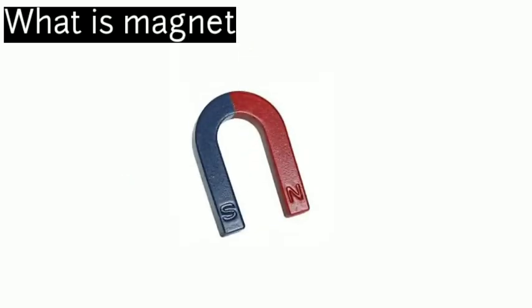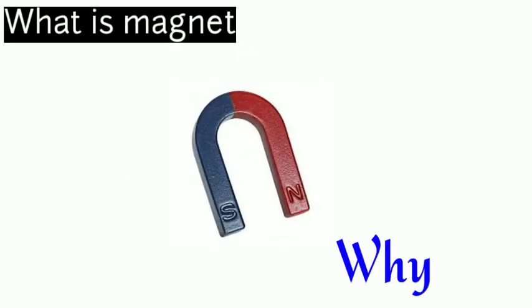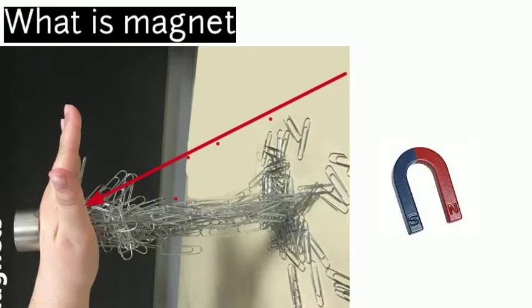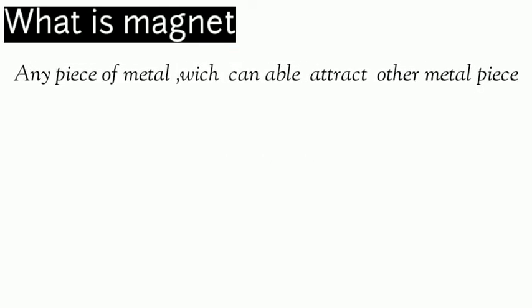So let's start. Yes, this is a magnet, but why is this a magnet? Any piece of metal which is able to attract some other piece of metal is called a magnet. Yes, this is a magnet. So that will be the definition: any piece of metal which is able to attract other metals.